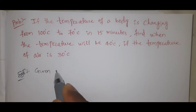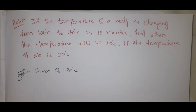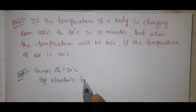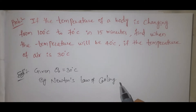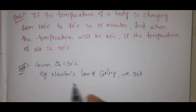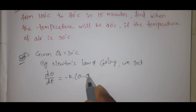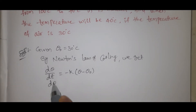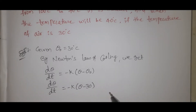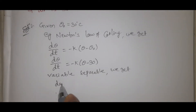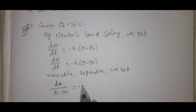Given theta naught equal to 30 degrees centigrade. By Newton's law of cooling, we get the formula: d theta by dt equal to minus k into theta minus theta naught. So d theta by dt equal to minus k into theta minus 30. Using variable separable method, we get d theta by theta minus 30 equal to minus k into dt.